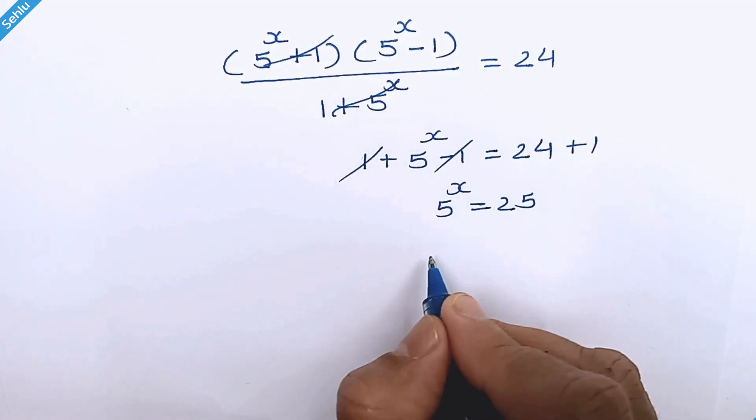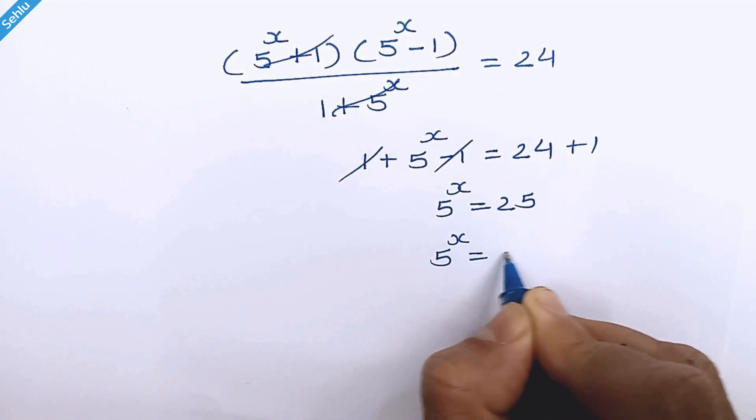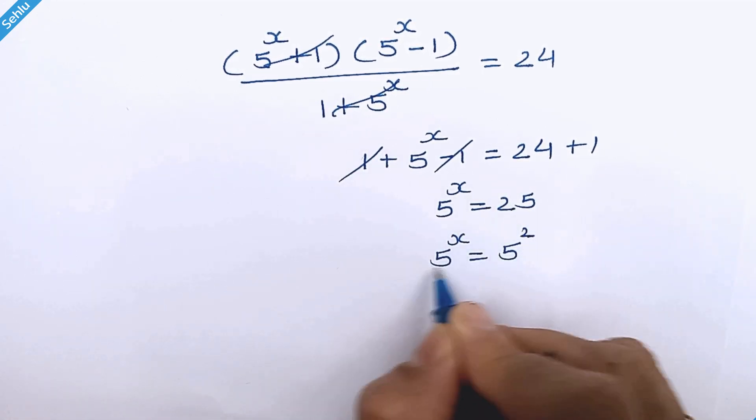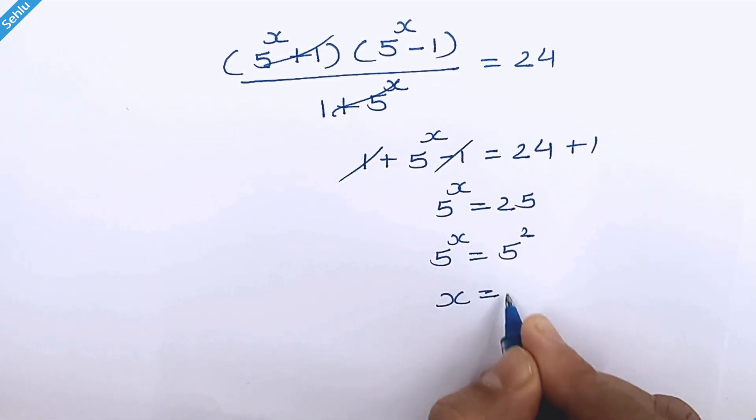25 is 5 square. Same base both the sides. So we can equate their exponent. So we have x is equal to 2. And this is our answer.